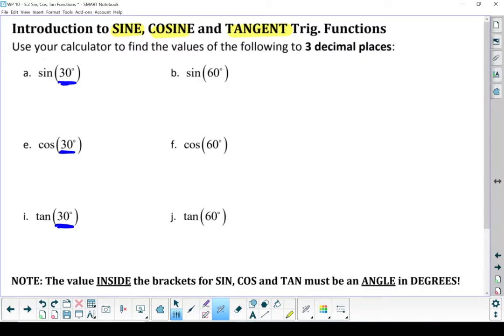And that something is always going to be an angle in degrees. That's what's always going to go in. You're always going to have degrees inside those brackets. So it's going to be a sine or a cos or a tan of a degree measure.